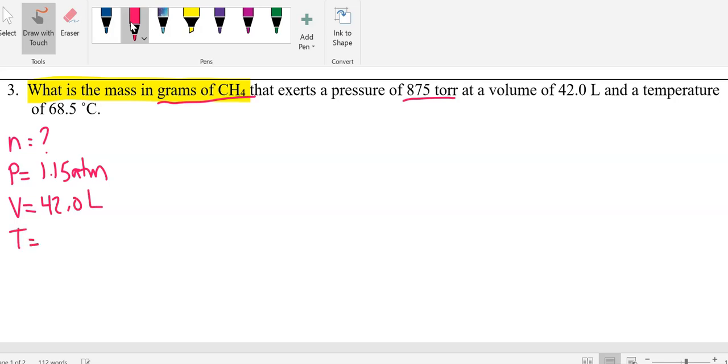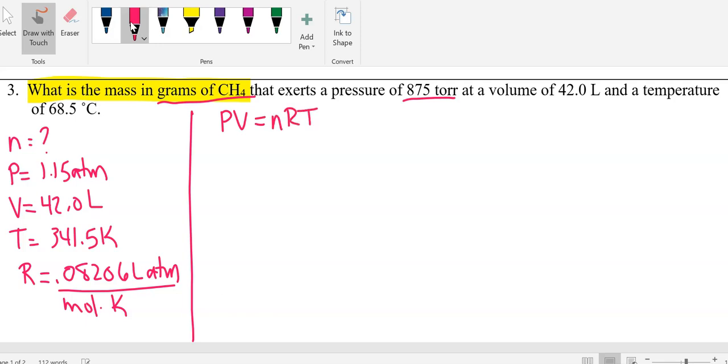Our temperature is going to need to be converted, so we're going to take 68.5 and add 273, and that gives us 341.5 kelvin. And finally, our R is 0.08206 liter atmospheres per mole kelvin. Now I'm going to draw my little line, so if PV equals nRT, dividing both sides by RT, then N is PV over RT, and plugging in.